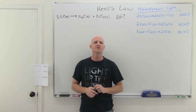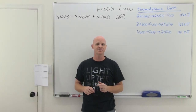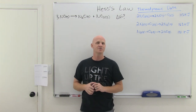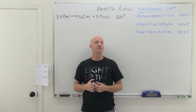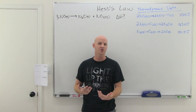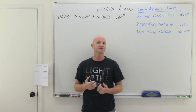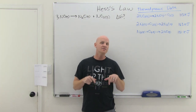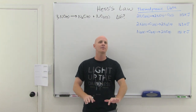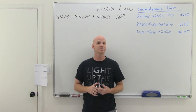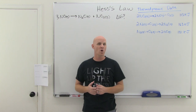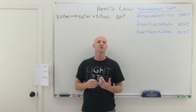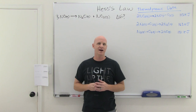Hess's Law and Enthalpy of Formation are going to be the topics of this lesson - kind of a two-part lesson. In the last lesson on calorimetry, we learned how we could go into the lab and actually measure the heat given off in a reaction and use it to calculate the delta H of a reaction. But in this lesson, we're not going to step foot in the lab whatsoever. We're going to learn two methods to just look up some thermodynamic quantities in the back of your textbook or in some published tables and use them to calculate the delta H of the reaction.